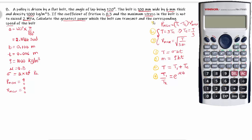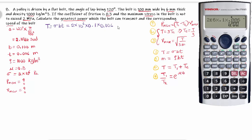Step 1: Calculate the maximum tension. T is equal to sigma into b into t. Substituting: sigma value is 2 into 10 raised to 6, b is 0.1 meters, and thickness t is 0.006 meters. Therefore, maximum tension T is equal to 2 × 10⁶ × 0.1 × 0.006, which gives 1200 newtons.